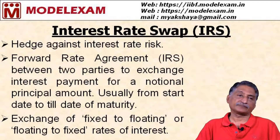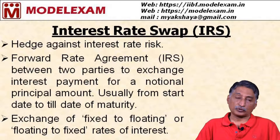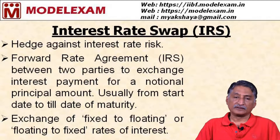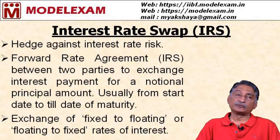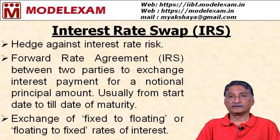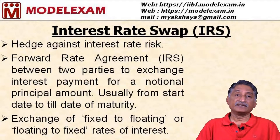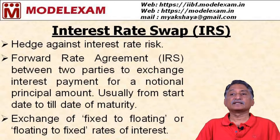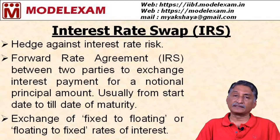To explain IRS with an example: a banker has invested 100 crores at a fixed rate of interest for a maturity period of 10 years. The banker is of the view that the existing fixed rate is low, and supposing he is able to have an IRS for a floating rate tied to a reference rate, he will get a better return on the investment of 100 crores. The IRS swap is then made between the banker and the party agreeing to take the fixed rate.